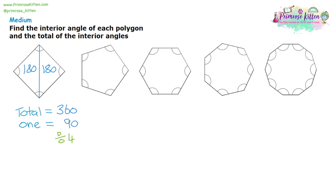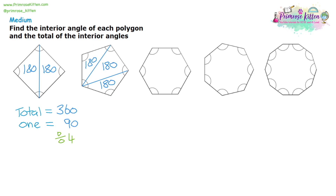Moving on to question two, which is a pentagon. We're going to cut it up into triangles, but we have to start from the same corner — drawing all the lines from one corner to get the minimum number of triangles. A pentagon has a 180-degree triangle at the bottom and a 180-degree triangle in the middle, so we do 180 times three. That gives us our total interior angles: 540 degrees. Pentagons have five angles and five sides, so we divide by five. 540 divided by five gives us 108 degrees for one angle.